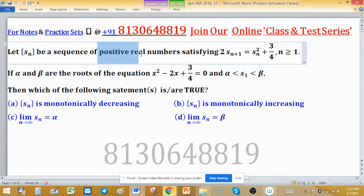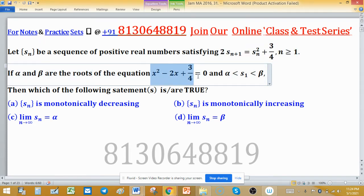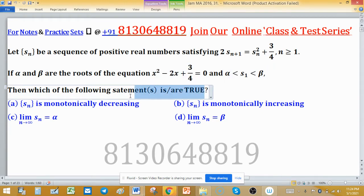Let SN be a sequence of positive real numbers satisfying this relation, for all n greater than or equal to 1. If alpha and beta are the roots of this equation and satisfying this condition, then which of the following statement is or are true?